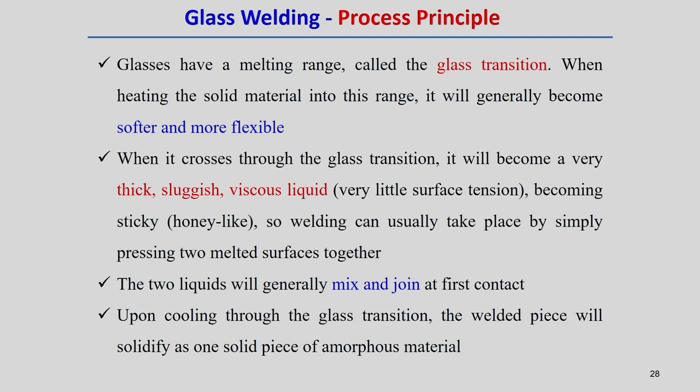By heating, we can bring the glass to that situation. At this point, if we try to give some kind of shape to the glass, it will take that shape. After cooling, the glass takes a particular shape. When it crosses through the glass transition temperature, it becomes a very thick, sluggish, viscous liquid. As viscosity increases, surface tension decreases, and it becomes a very sticky, honey-like structure. Welding usually takes place by simply pressing two melted surfaces together.